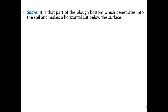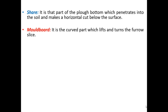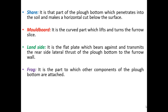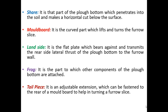What is shear? It is the part of the plow bottom which penetrates into the soil and makes a horizontal cut below the surface. Moldboard is the curved part which lifts and turns the furrow slice. Land side is the flat plate which bears against and transmits the rear side lateral thrust of the plow bottom to the furrow wall. Frog is the part to which other components of the plow bottom are attached. Tailpiece is an adjustable extension which can be fastened to the rear of the moldboard to help in turning a furrow slice.